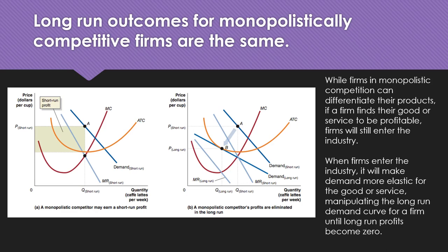In long-run situations, monopolistically competitive firms, like perfectly competitive firms, are assumed to earn break-even or zero profits in the long run. The shutdown rule from perfect competition also applies in the short run for monopolistically competitive firms — just because a firm is profitable in the cafe latte example doesn't mean it always is. If price is higher than average variable cost, stay in business. If price is less than average variable cost, shut down.